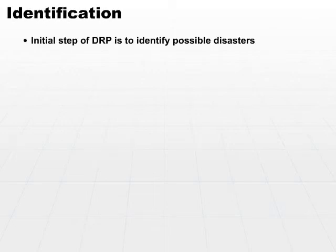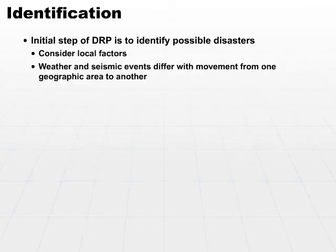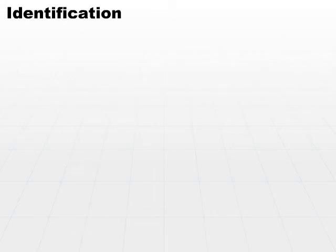The initial step of the DRP is to identify possible disasters that can affect your particular system. You must consider many local factors. Some local factors, such as weather and seismic events, differ as you move from one geographic area to another. Let's take a look at a few possible natural disasters that you may need to consider.